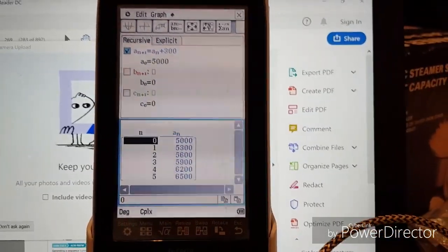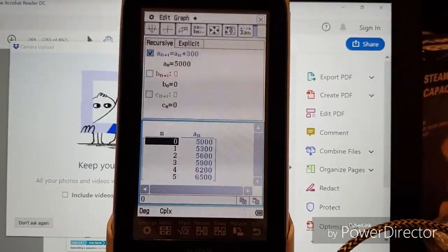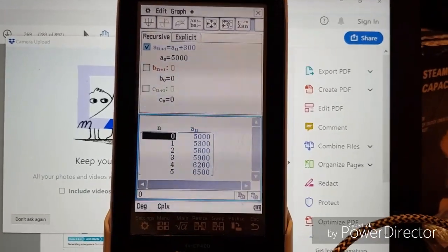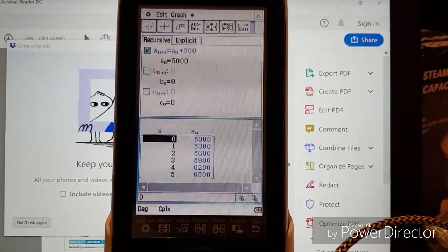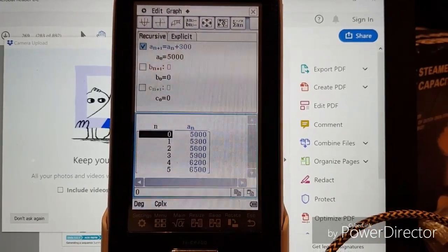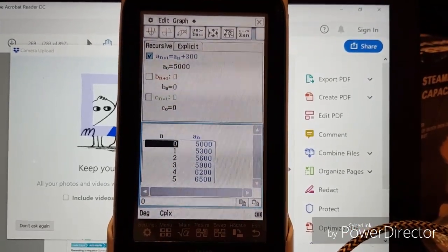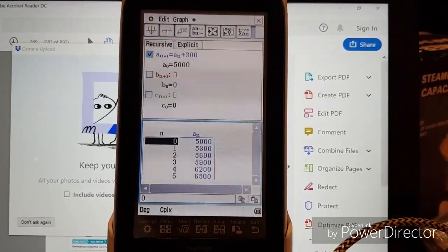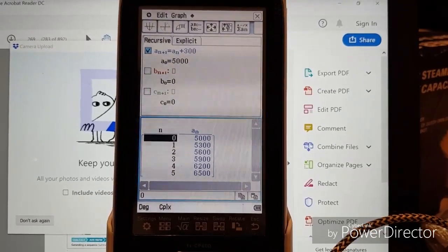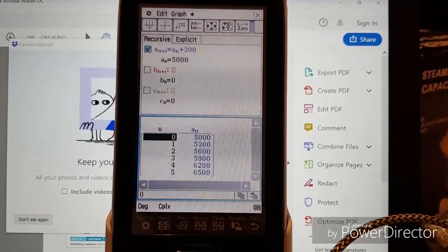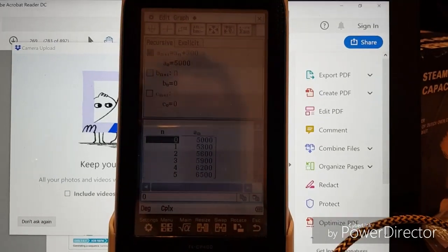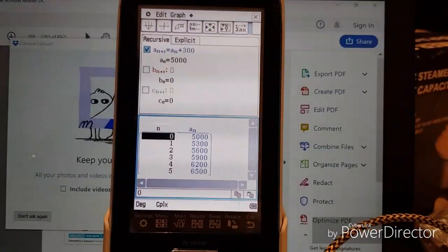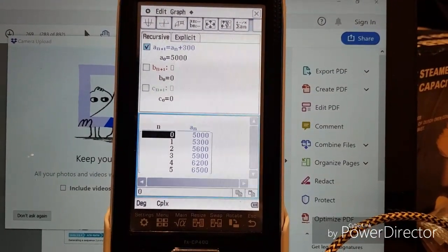So off camera I'm going to copy that. In year 0 we started with $5,000, but then at the end of year 1 we now have $5,300. At the end of year 2 we have $5,600. At the end of year 3, $5,900. Year 4, $6,200. And then at the end of year 5, $6,500. Lovely.